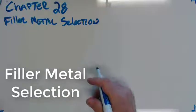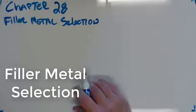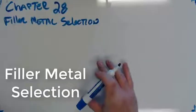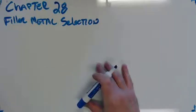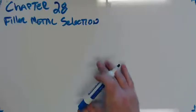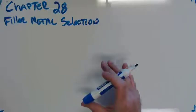Hello and welcome to chapter 28. Today we're going to talk about filler metal selection. This chapter covers a lot of ground - Charpy testing, tensile testing, carbon equivalency calculations, decoding filler metals, and hydrogen related weld problems.